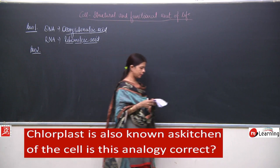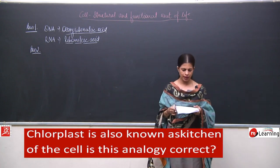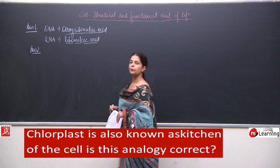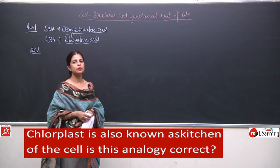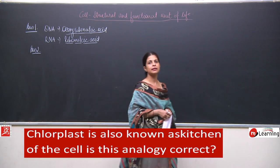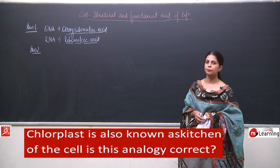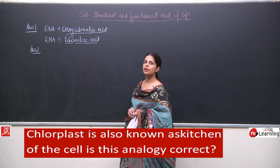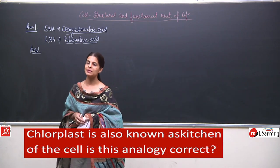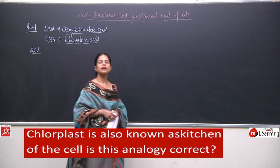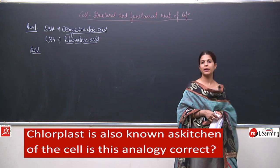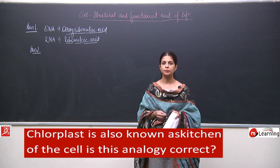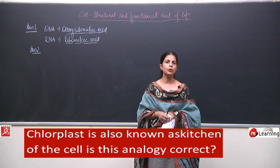Question number 2: Chloroplast is also known as the kitchen of the cell. Do you think this analogy is correct? In the last lecture we discussed that chloroplast is often known as the kitchen of the plant. The pigment chlorophyll is present in the chloroplast, which traps sunlight, and that is why photosynthesis takes place in plants.